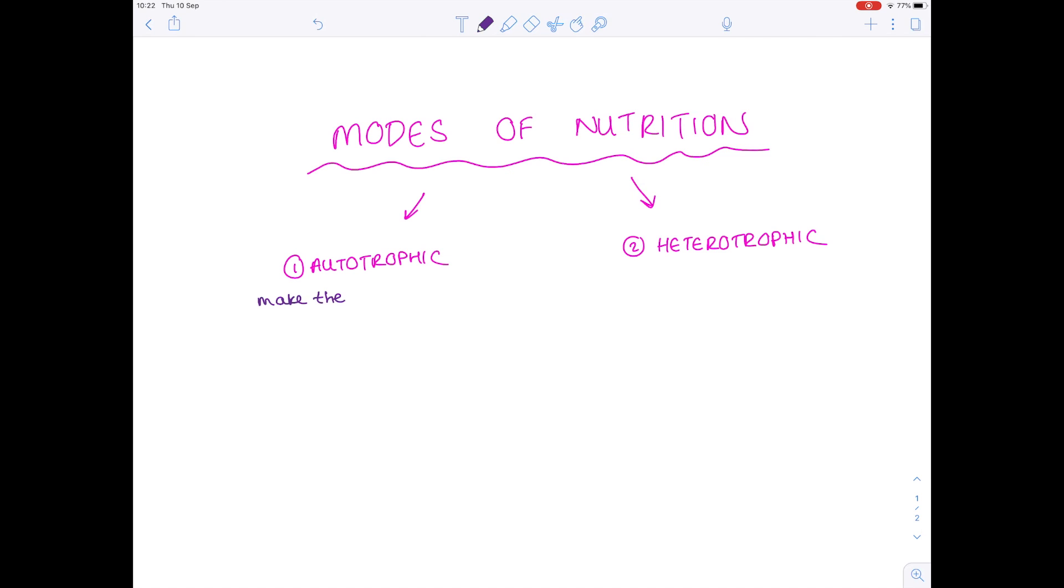To give you a basic summary, autotrophs effectively make their own food, whereas heterotrophs have to obtain their food from other organisms. As a result, heterotrophs can be broken down and further subcategorized into saprotrophs, consumers, and finally detrivores.